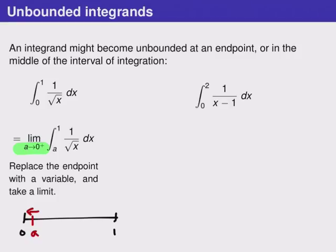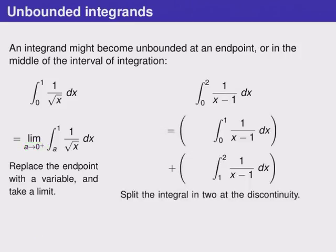Let's take a look at the right here. In this case we have a problem at x equals 1, which is right in the middle of the interval of integration. To fix this we're going to do an algebraic trick that turns this integral into one that has problems at the endpoints instead of in the middle. So we'll split this integral up into two parts.